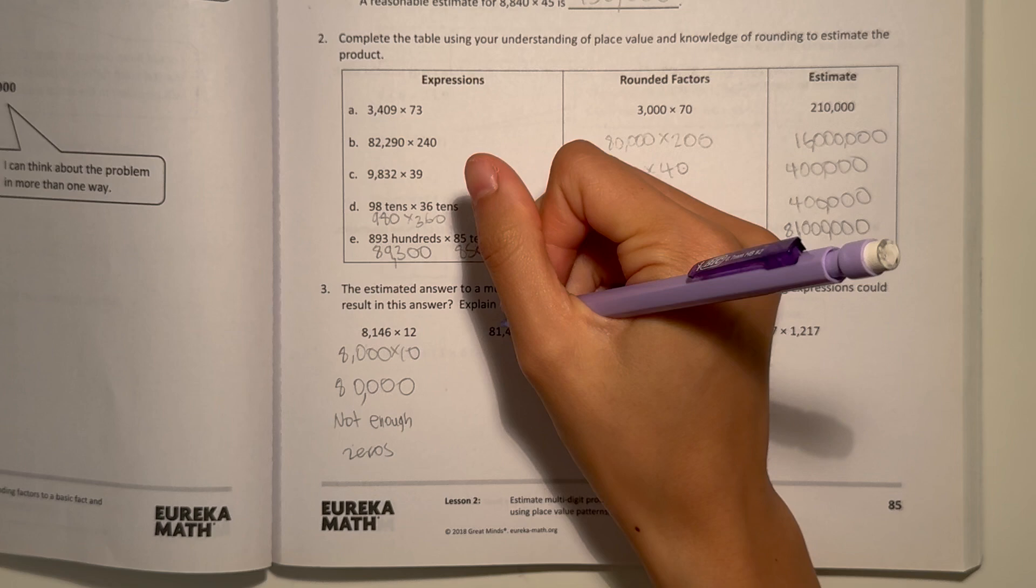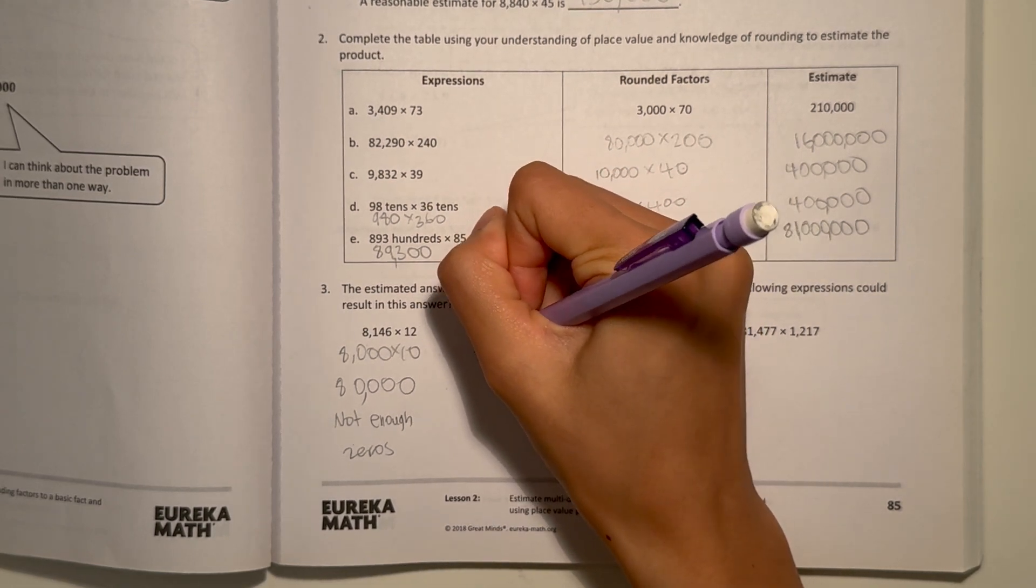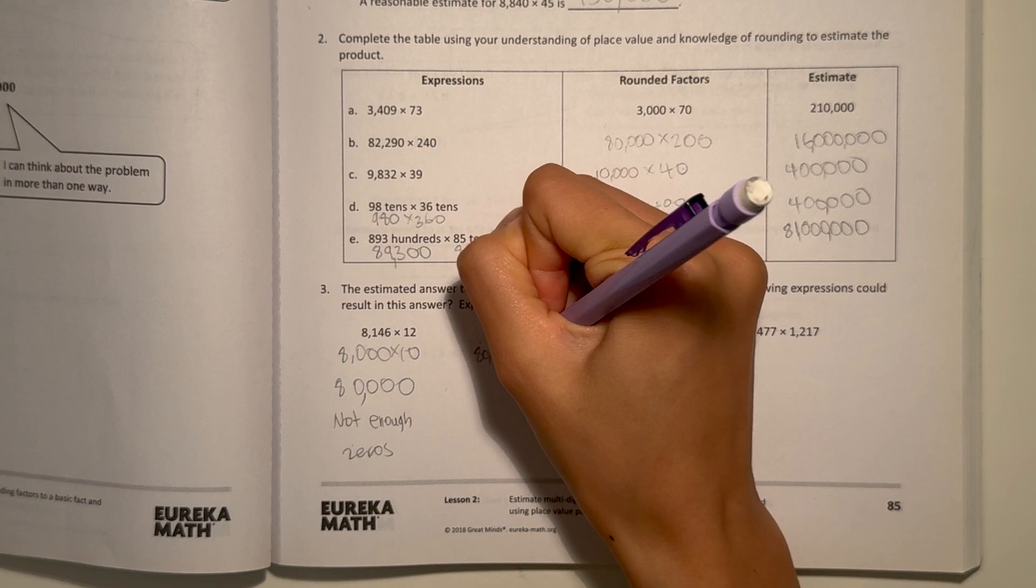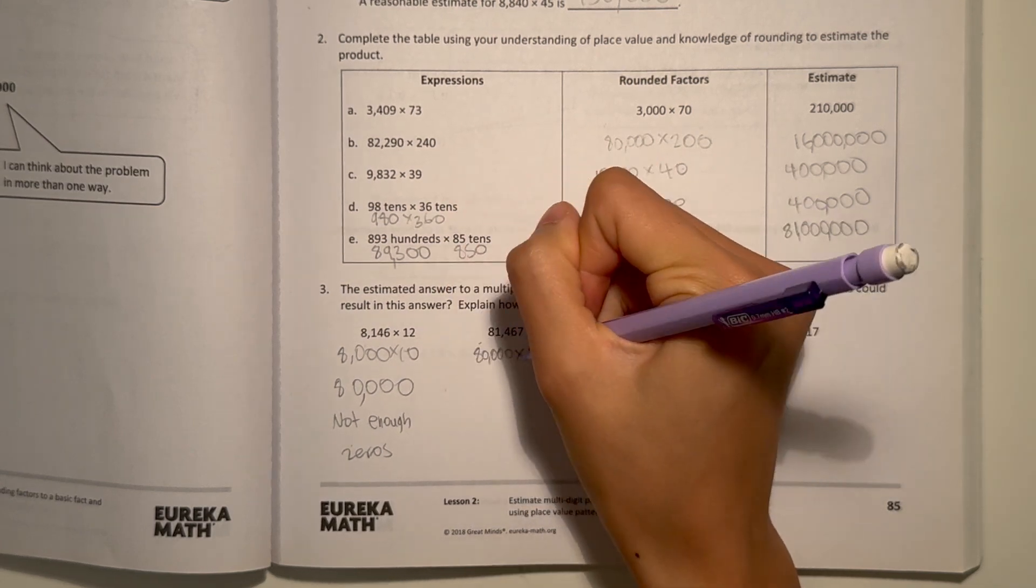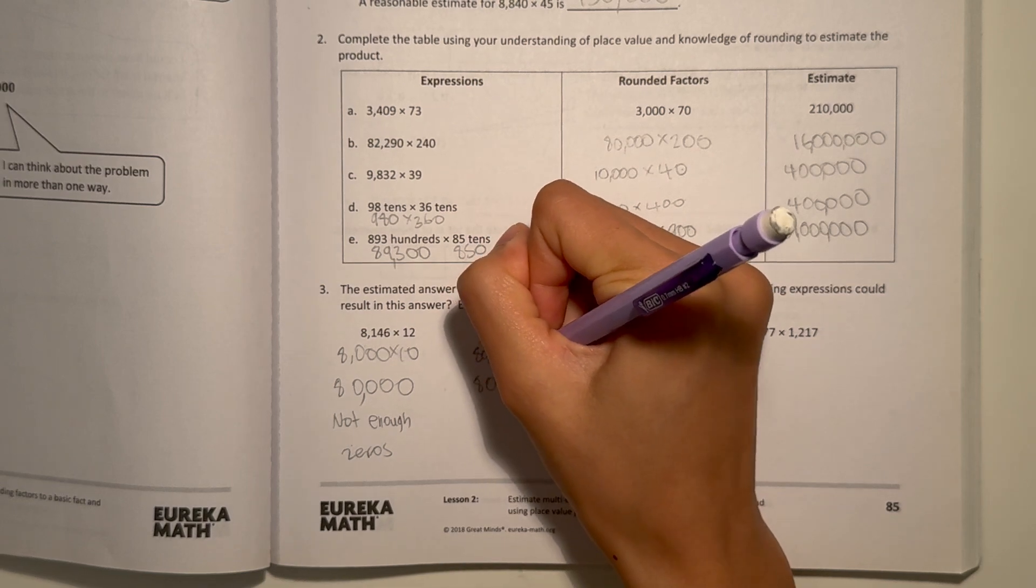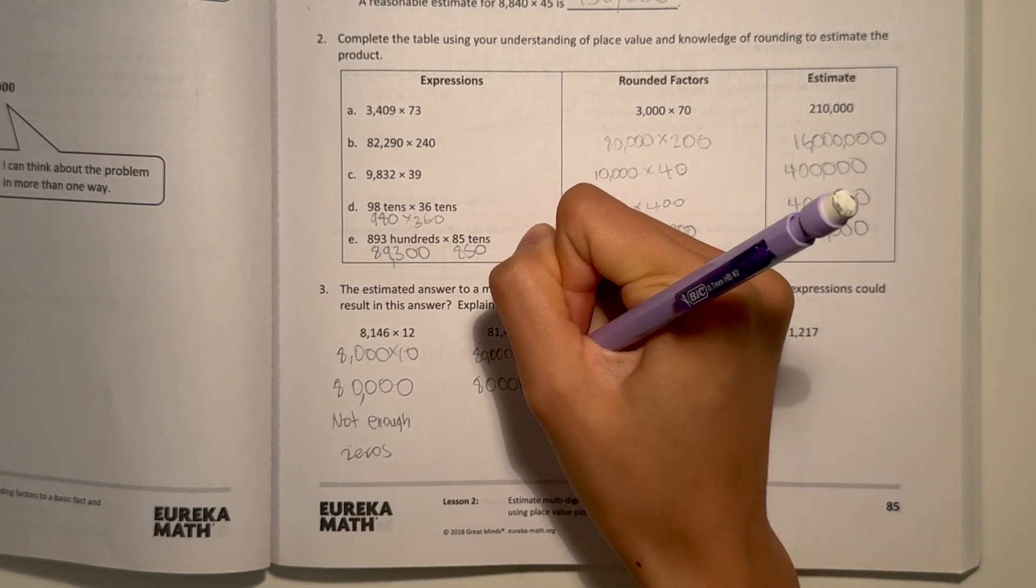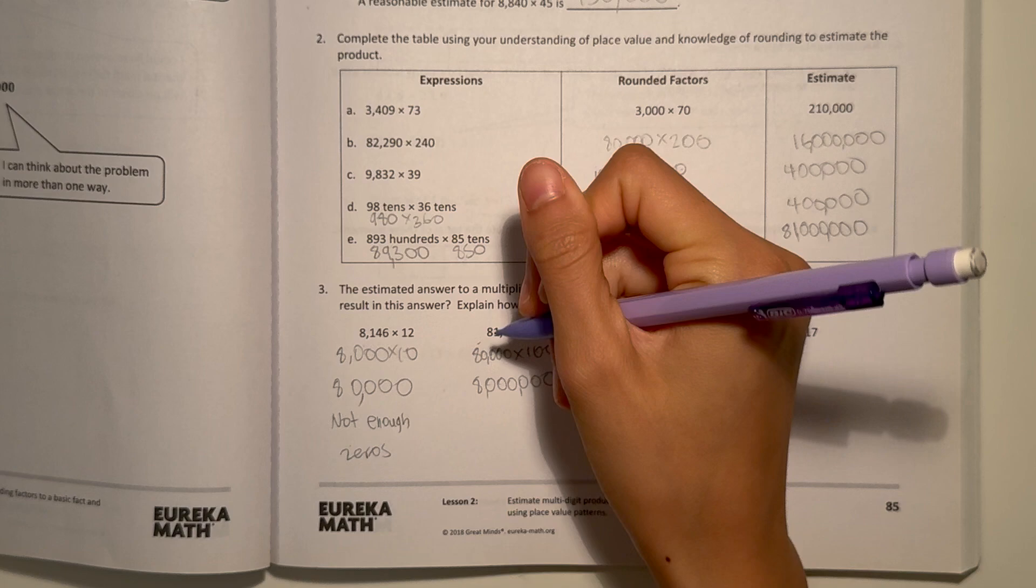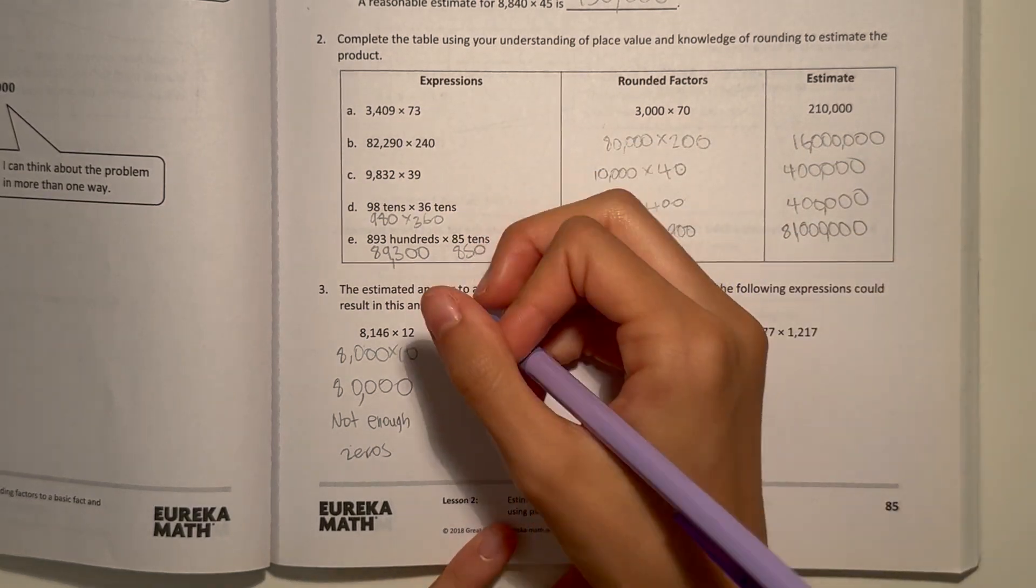And the next one. This would round to 80,000 × 100. 8 × 1 is 8, and there's 1, 2, 3, 4, 5, 6 zeros. That would be 8,000,000. So this one actually has too many zeros.